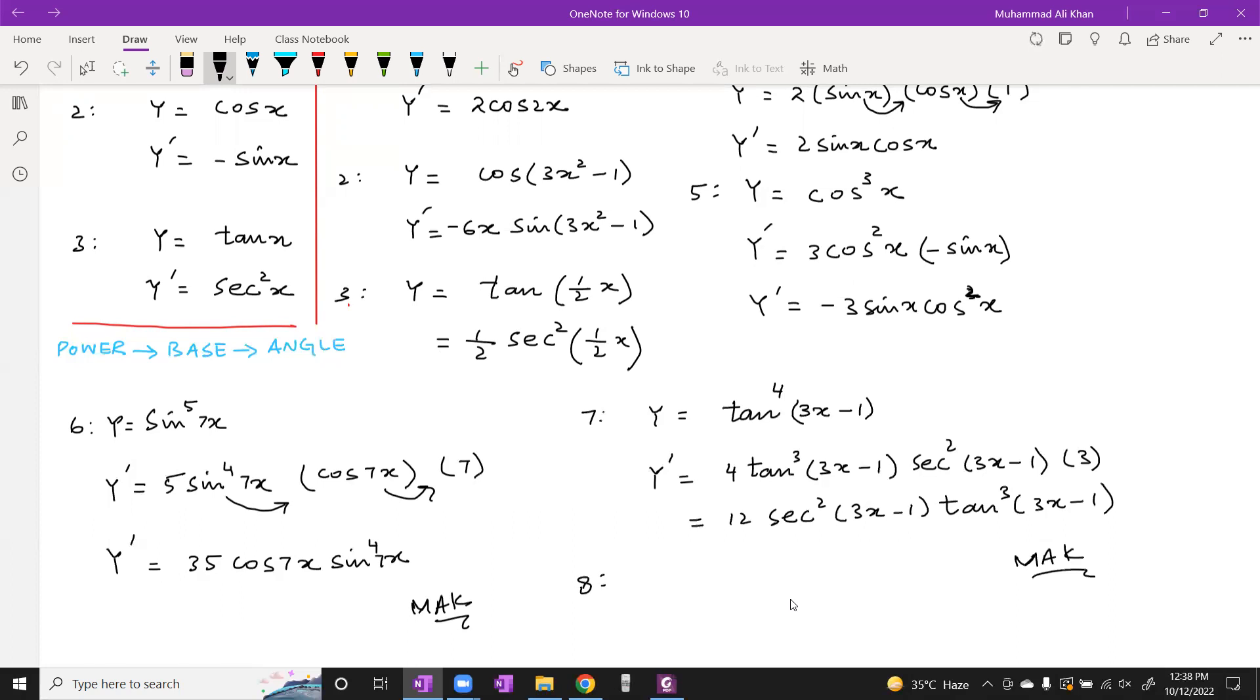8th one: y equals to cos x squared. So y dash kya hojayega? Cos angle ki power hai, yeh toh cross. Whole ki power nahi hai. So cos ka kya hojayega? Minus sine x squared. Angle ka derivative kya hojayega? 2x. So the final answer is minus 2x sine x squared. Angle ki power angle par rehegi, and the power of the function is transferred to the whole. Is this clear?